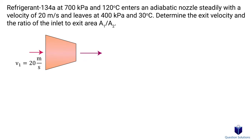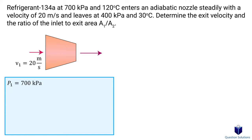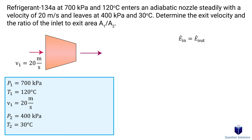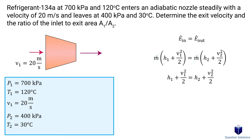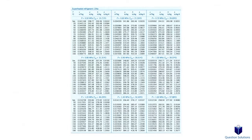Next, we have refrigerant R-134a entering a nozzle. We need to find the exit velocity and the ratio of inlet to exit area. The initial pressure is 700 kPa, initial temperature is 120°C, and initial velocity is 20 m/s. The final pressure is 400 kPa and temperature is 30°C. We start with the energy balance equation. Since this is a nozzle, work is zero, heat transfer is negligible, and potential energy change is negligible. We only consider enthalpy and kinetic energy, and since there is one inlet and one outlet, mass flow cancels out.